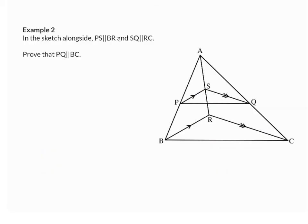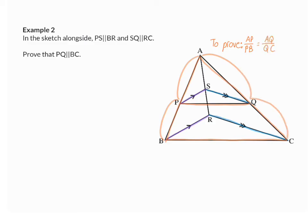Example 2. In the sketch alongside, PS is parallel to BR, and SQ is parallel to RC. We have to prove that PQ is parallel to BC. To prove this, we are actually working in triangle ABC, and in this triangle we need to prove that AP/PB is in the same ratio as AQ/QC.